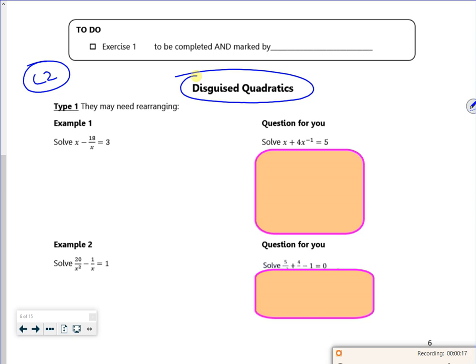One is if you just need to rearrange them where it kind of looks like a quadratic-ish. So if you look at this one, if I multiply 3 by x, I get an x squared and I get a minus 18 and I get a 3x. Please be careful because what people do is you just take the x up on the other side, but you've not actually done that, you've multiplied each term by x. So please be careful with that.